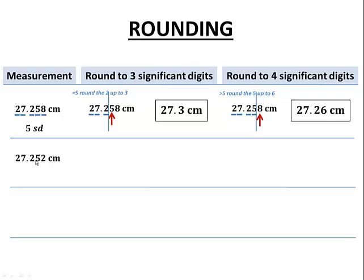Here's another example: 27.252. This one also has five significant digits, all non-zero numbers. Let's round to three. We're going to keep these three. Let's put our barrier so we can focus on this number here. That is equal to five, so our rule is that we're going to round up this two to three. So 27.3 centimeters again.